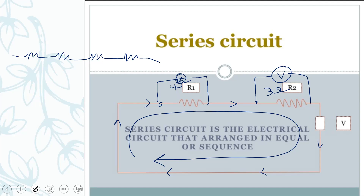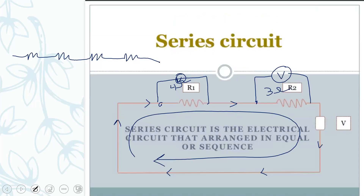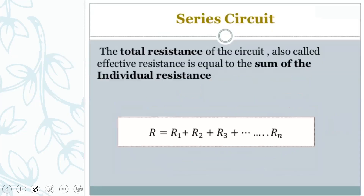When you want to find the total resistance, you simply add them. For example, if you want to find R total, you add R1 plus R2. This summation gives you the effective resistance of the circuit.